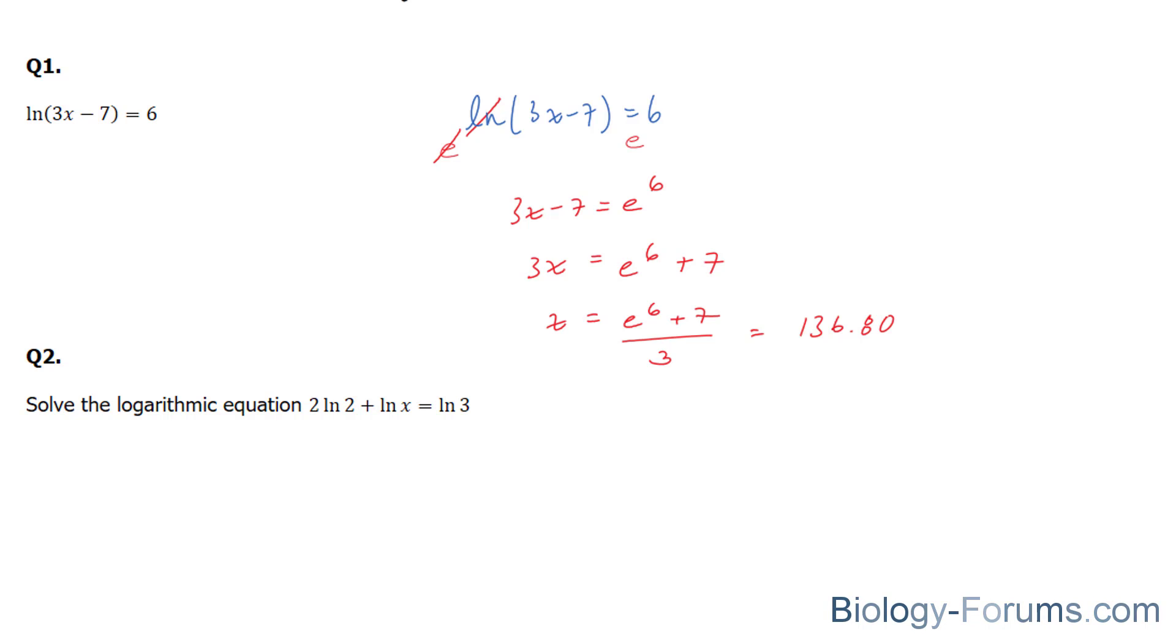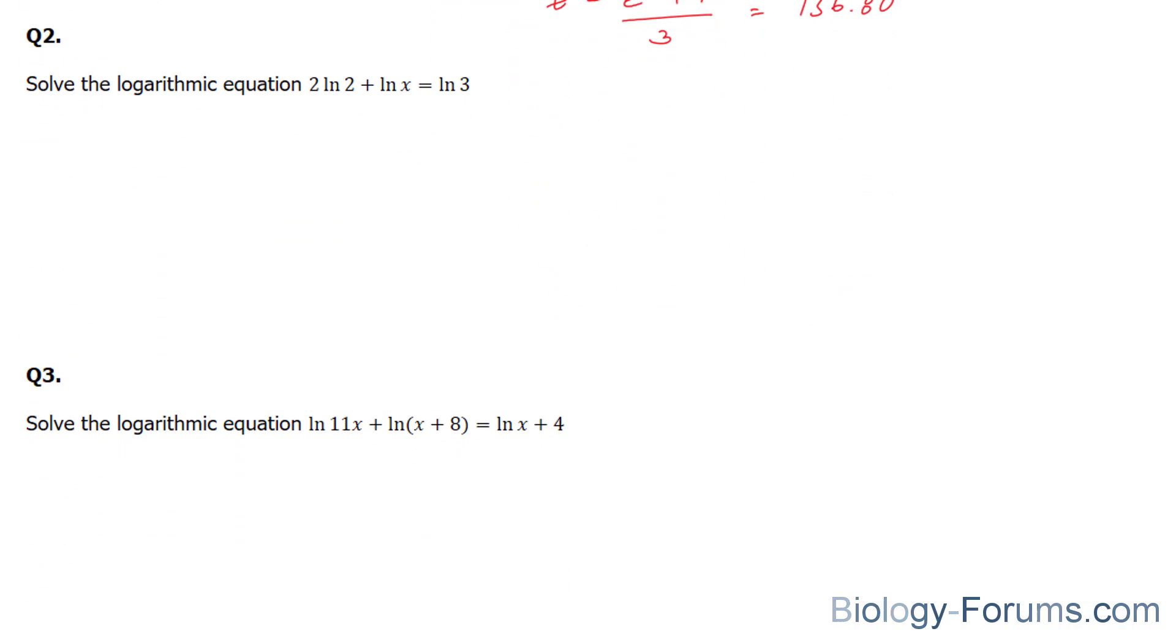Let's move on to question number 2. And in order to be successful with question number 2, you do need to know the properties of logarithms. You'll notice that on the left side, you have 2ln2 + lnx = ln3. Now, 2ln2 can be changed to ln(2^2). Because one of the properties of logarithms is that if you have a coefficient at the front, it becomes the power of what's here. So this technically equals ln4 + lnx = ln3.